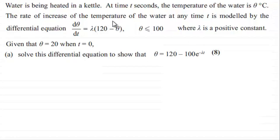The rate of increase of the temperature of the water at any time t is modeled by the differential equation dθ/dt = λ(120 - θ), and θ ≤ 100, where λ is a positive constant. Given that θ = 20 when t = 0, we're asked to solve this differential equation to show that θ = 120 - 100e^(-λt) for 8 marks.